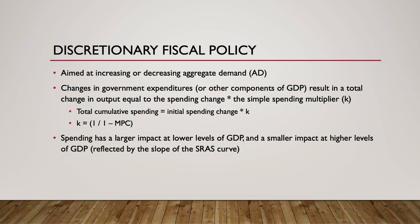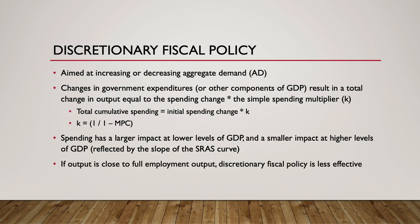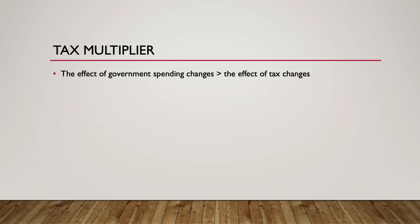The steeper the short-run aggregate supply curve, the smaller the effect of stimulus spending. It takes extremely large amounts of government spending to stimulate small increases in output when the short-run aggregate supply curve is steep. Changes in taxes don't have as large of an effect on GDP due to the fact that disposable income is equal to gross income minus net taxes.